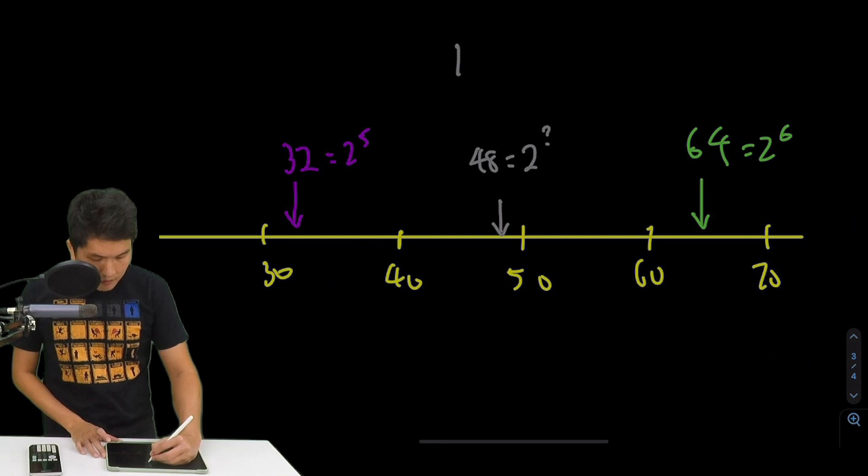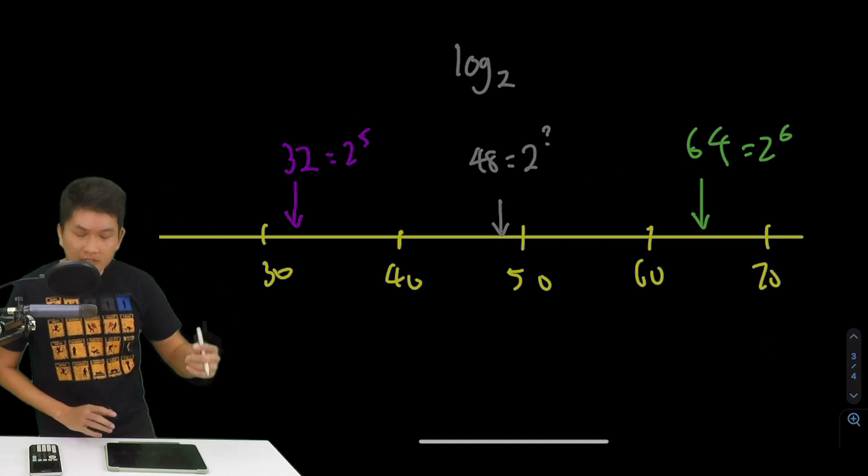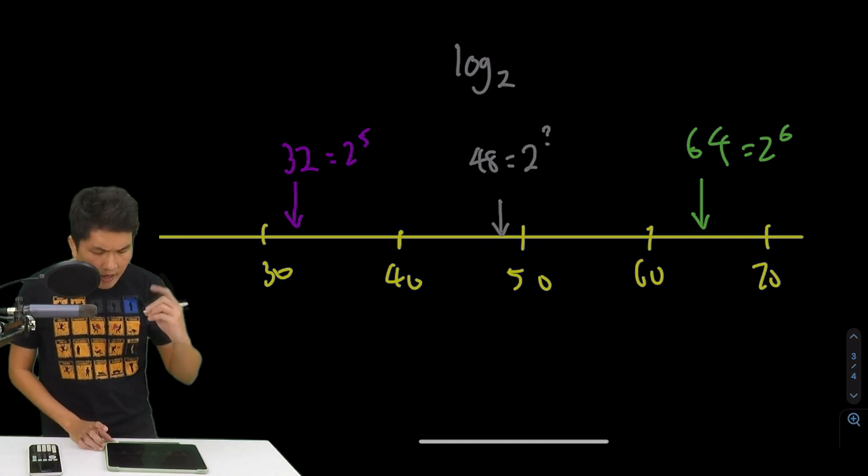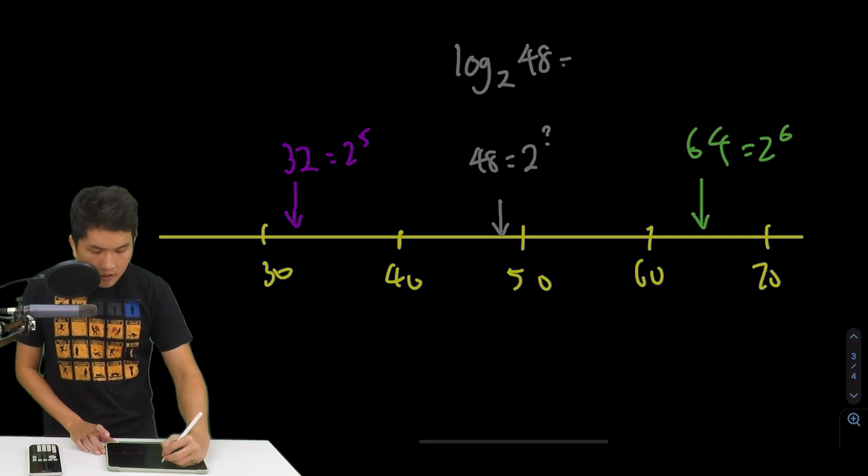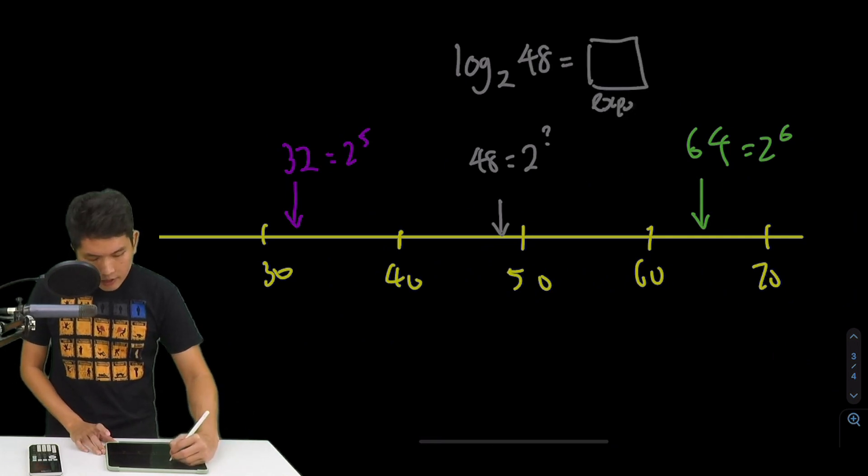Because let me show you how to ask this question in logarithms. We write it this way. We say log base 2. Remember, we kind of like base 2, binary for life. Base 2. And then if I want 48, what is the power? What is the exponent?